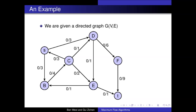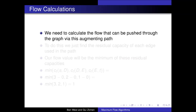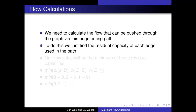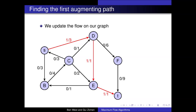Let's work through an example. We are given a simple directed graph. Using the second Edmonds-Karp rule, we look for the augmenting path with the least number of edges, and we find a path of length 3. We calculate the flow that can be pushed through the graph by this path. We need to calculate the residual capacity of each edge used, then find the minimum of these. In this case, we used edges SD, DE, and ET, with a minimum residual capacity of 1 on edge ET. This gives us a maximum flow of 1 that can be pushed using this path.